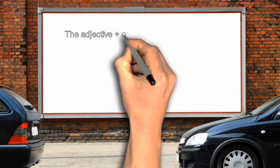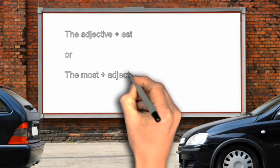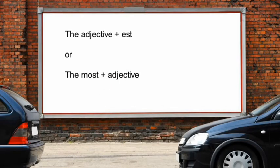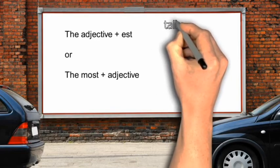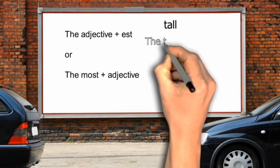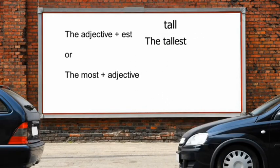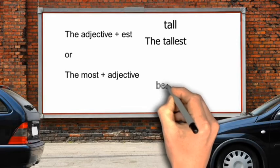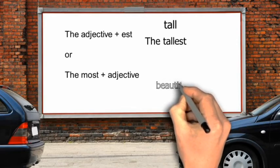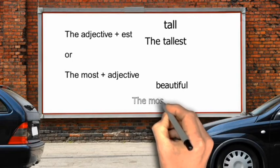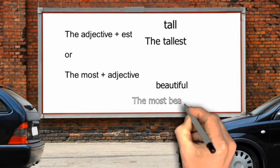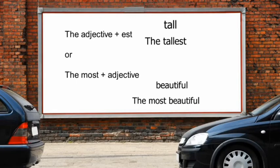What needs to be added: use 'the [adjective]-est' or 'the most [adjective]'. For example, 'tall' — tall has one syllable, so add -est. And then 'beautiful' — three syllables — so it becomes 'the most beautiful'.